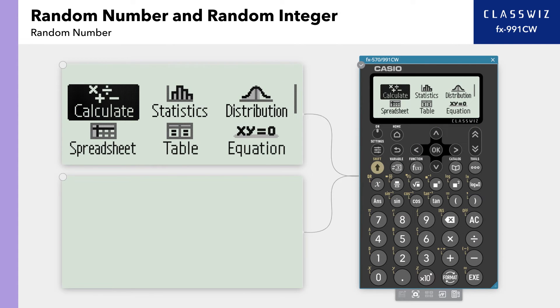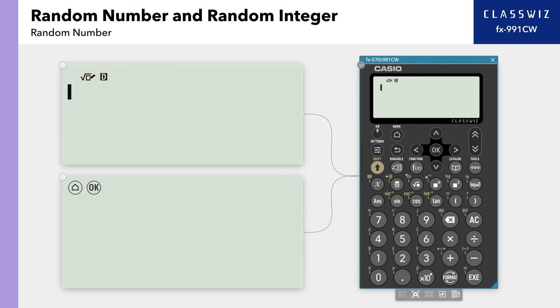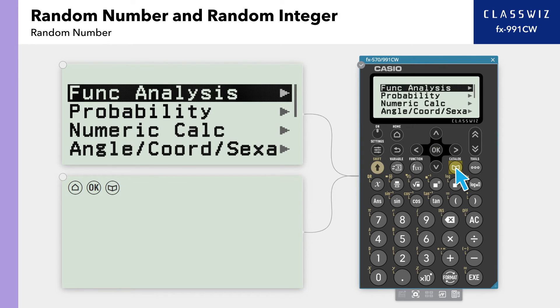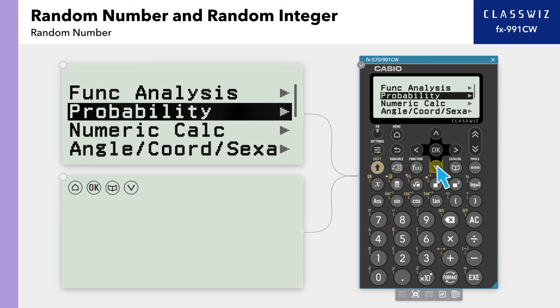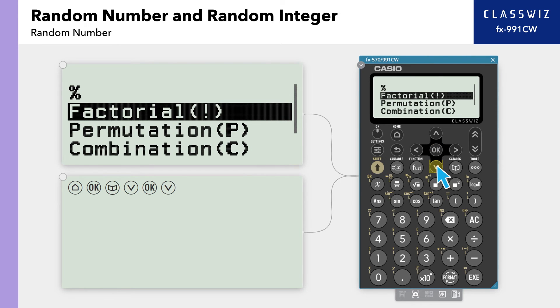Next, let's go over using a random number between 0.000 and 0.999. Press Home, then select Calculate. Then, press Catalog and select Probability. This time, select Random Number.